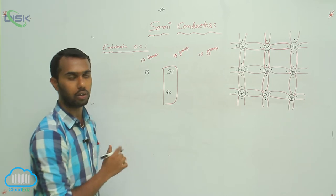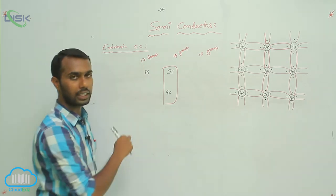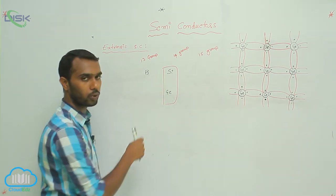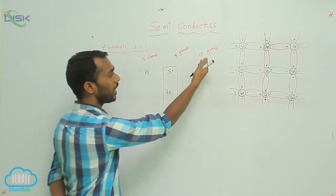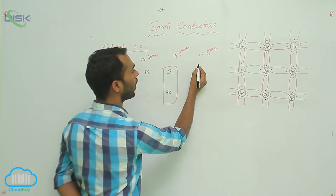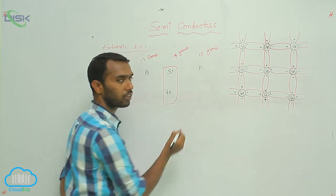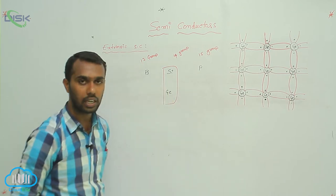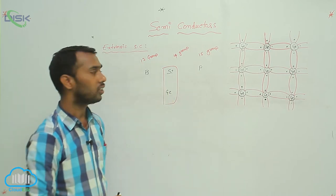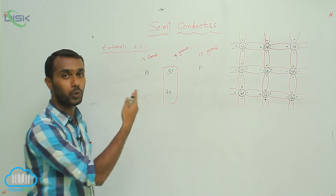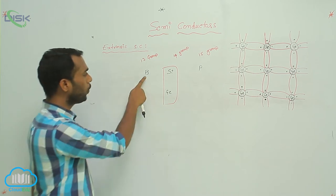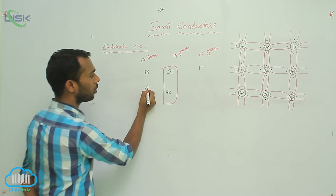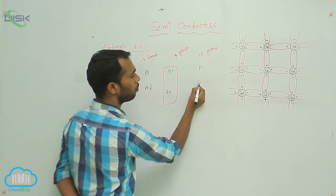For example, boron belongs to the 13th group and its atom size is nearly equal to silicon. For the 15th group, phosphorus is a good example — its atom size is nearly equal to silicon. So impurities are selected from 13th group elements like boron and aluminum, and 15th group elements like phosphorus and bismuth.